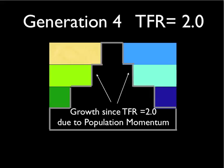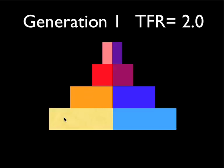So population momentum is the tendency for a population to continue to grow even though everybody's just replacing themselves, if, as we have here, the population had been growing and has a broad base. I hope this helps you understand population momentum and why it's important to begin to think about population now rather than in 2040 or 2050 when the population is 8 billion or 9 billion.